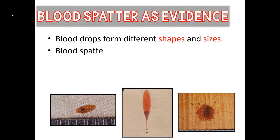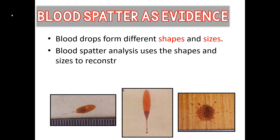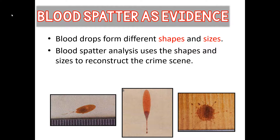Looking at these pictures, you can see different blood stains. You can have passive stains and then you can have velocity spatter. Velocity spatter can be further classified as low velocity spatter, meaning the blood was moving very slowly when it hit the surface, medium velocity spatter, which means it was traveling a bit faster, and high velocity spatter patterns, which create really tiny droplets that spread over a surface.